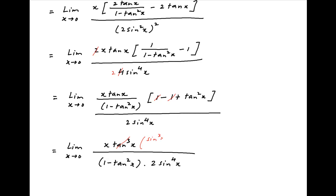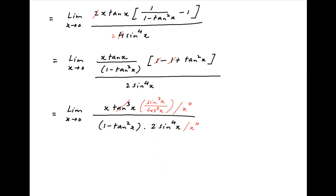tan³x in the numerator can be written as sin³x divided by cos³x. Also, let's divide both the numerator and the denominator by x raised to the power 4.